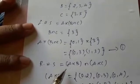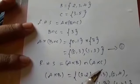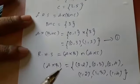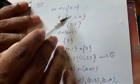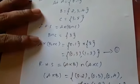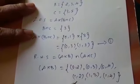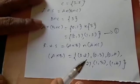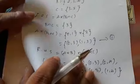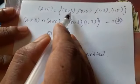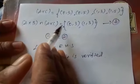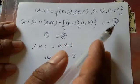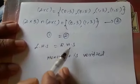Next, RHS = (A × B) ∩ (A × C). First find A × B. A = {0, 1}, B = {2, 3, 4}. Multiply A into B row by row: (0,2), (0,3), (0,4), (1,2), (1,3), (1,4). Next find A × C. A × C gives (0,3), (0,5), (1,3), (1,5). Therefore, (A × B) ∩ (A × C) = {(0,3), (1,3)}, which is equation 2. Since equation 1 = equation 2, LHS = RHS. Hence it is verified.